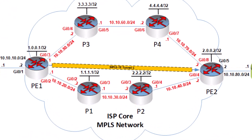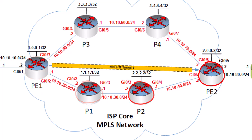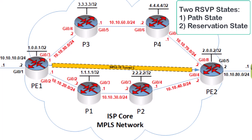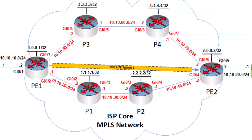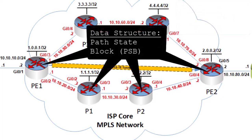For our tunnel here, let's assume that our setup has selected the path via PE1, P1, P2, and PE2 to establish our MPLS TE tunnel. All of these routers have been enabled with RSVP TE. As such, each router keeps track of two particular states: the path state and the reservation state. The path state keeps track of various parameters of the path itself. These parameters are stored within a data structure in each RSVP-enabled router called the path state block, or the PSB.